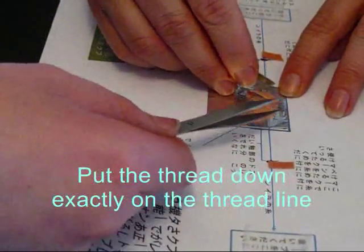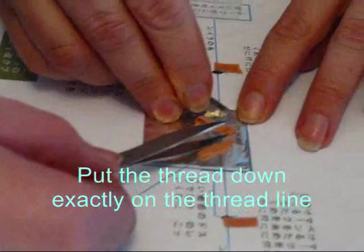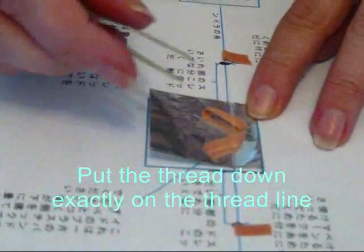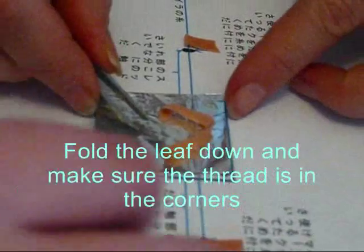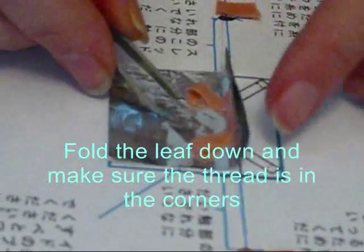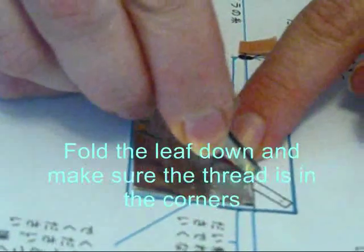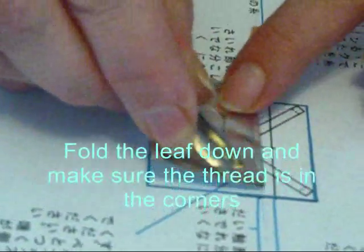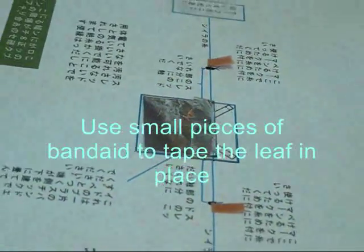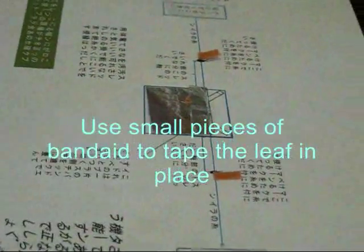Pull the thread down exactly on the thread line. Pull the leaf down and make sure the thread is in its corners. Use small pieces of band-aid to tape the leaves in place.